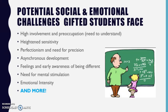Let's go over some of the potential social and emotional challenges that gifted students face. Some challenges include high involvement and preoccupation — the need to understand and know more — heightened sensitivity, perfectionism, the need for position, asynchronous development, feelings, and early awareness of being different. Also, the need for mental stimulation, emotional intensity, and much more. Every child is different and has different needs that need to be met.